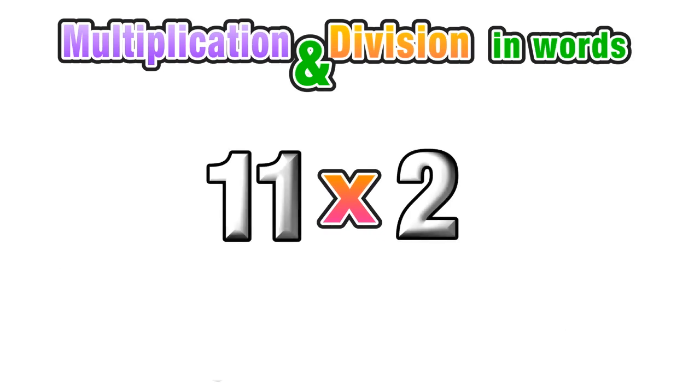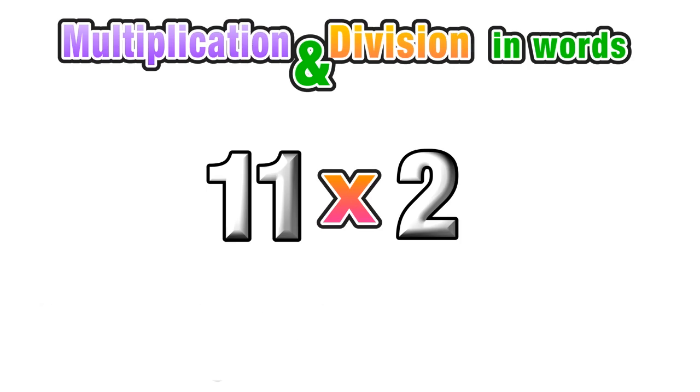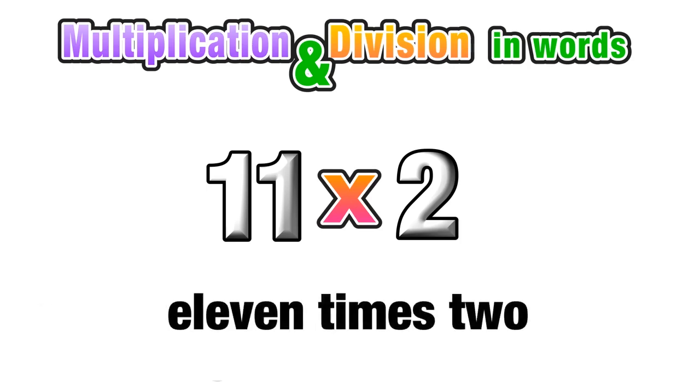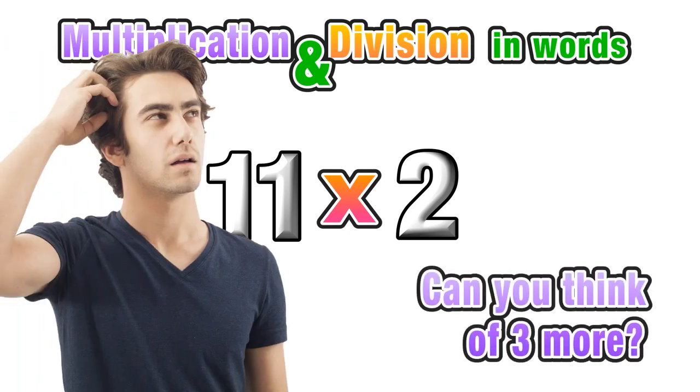For example, if we had something like 11 times 2, we could represent that as the product of 11 and 2, or just 11 times 2. So now, using that list of words and phrases, see if you can come up with three more ways to verbally represent 11 times 2.